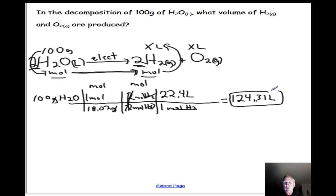This seems pretty remarkable when you think about it. 100 grams of water, equal to 100 milliliters of water, would decompose into 124.31 liters of hydrogen gas, an enormous volume. But this makes sense because gases take up much more space than liquids do. They're much less dense.